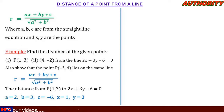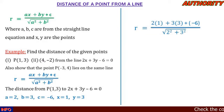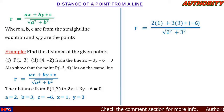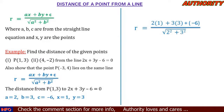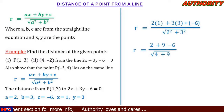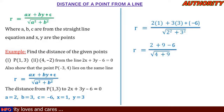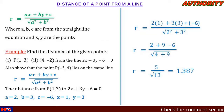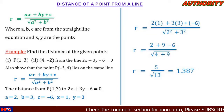Plugging into the formula: r equals 2(1) plus 3(3) plus (minus 6), all over square root of 2 squared plus 3 squared. In the numerator: 2 times 1 is 2, plus 3 times 3 is 9, minus 6. So 2 plus 9 minus 6 equals 5. The denominator: square root of 4 plus 9 equals square root of 13. Therefore r equals 5 over square root of 13, which is approximately 1.387.